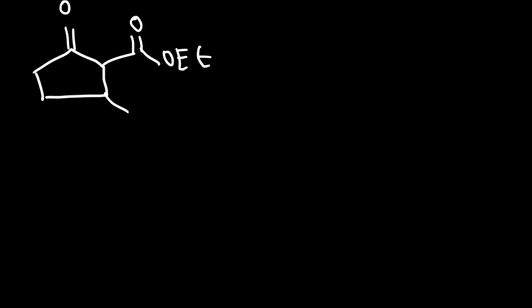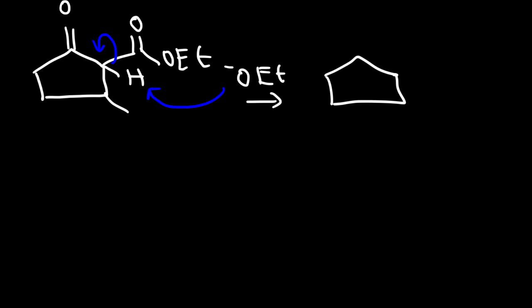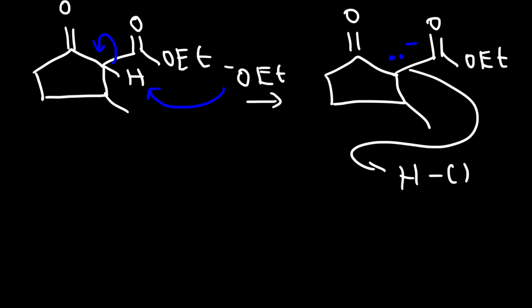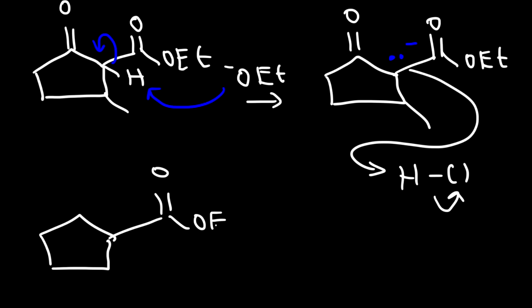If you only want to draw the products, you can stop here. However, if you want to show the complete mechanism, then because the solution is still basic, you need to remove the alpha hydrogen. Then to get the product we want, acidify the solution. Let's call this product B, because it came from hydrogen B.